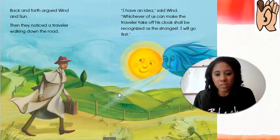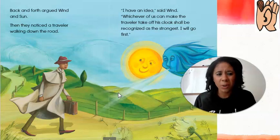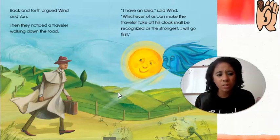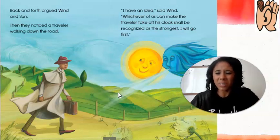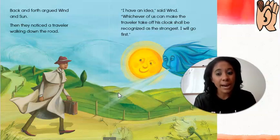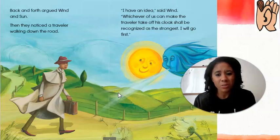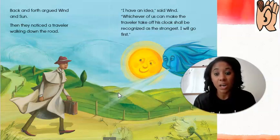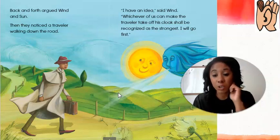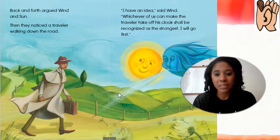We just need to figure out what these characters are learning from. At the beginning of the story they were arguing with each other, saying that they were stronger than the other, and they weren't really getting along. Now I'm going to read the last page, and this is when we're really going to focus on the lesson that they've learned. Remember, a lesson is maybe like a mistake that you learn from. Let's listen and read that last page.